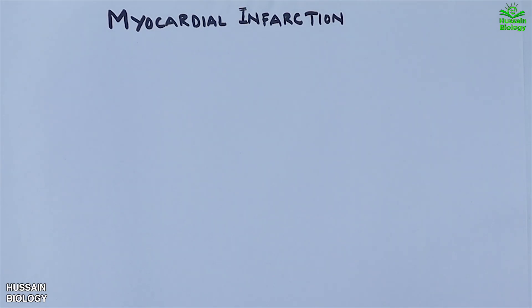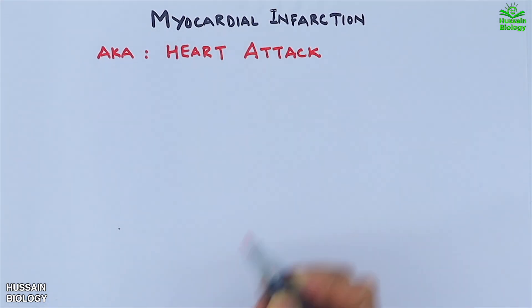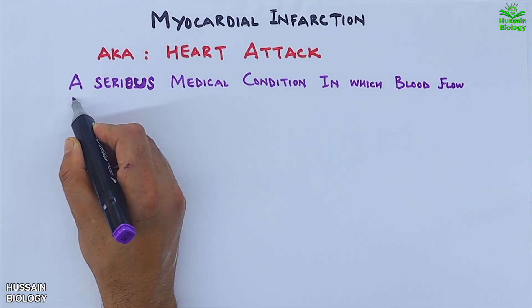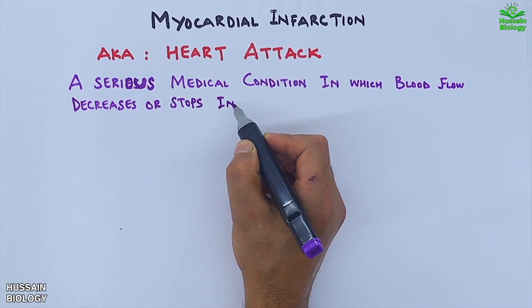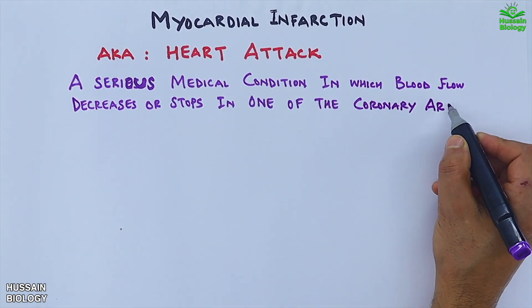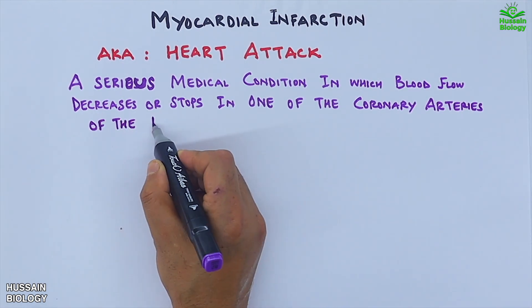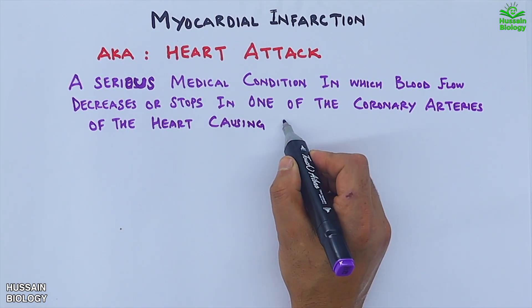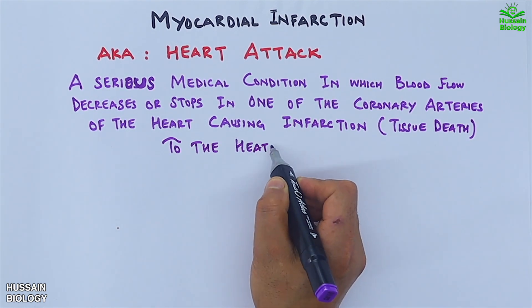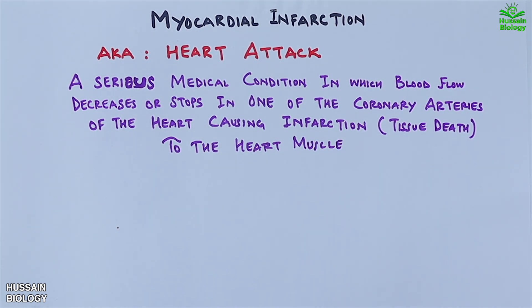In this video we are going to discuss myocardial infarction, also known as heart attack. Myocardial infarction is a serious medical condition where the blood flow to the heart muscle either decreases significantly or stops altogether due to a blockage in one of the coronary arteries, which supply blood to the heart. When this blood flow is restricted, it can lead to infarction — or in simpler terms, tissue death in the heart muscle.